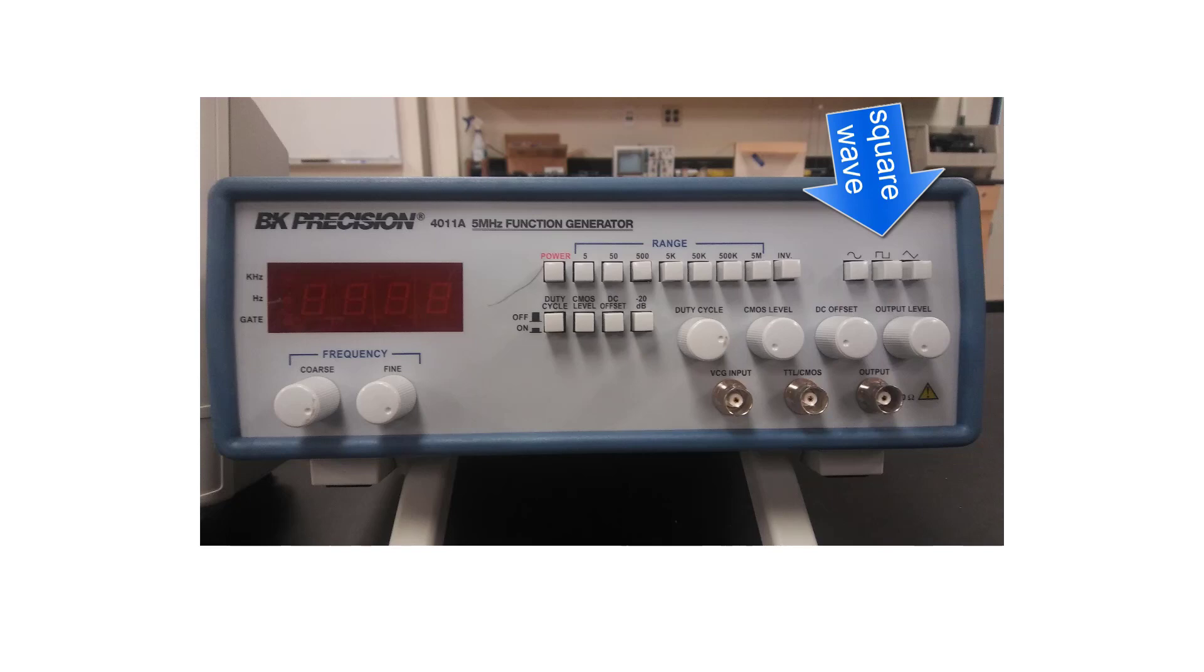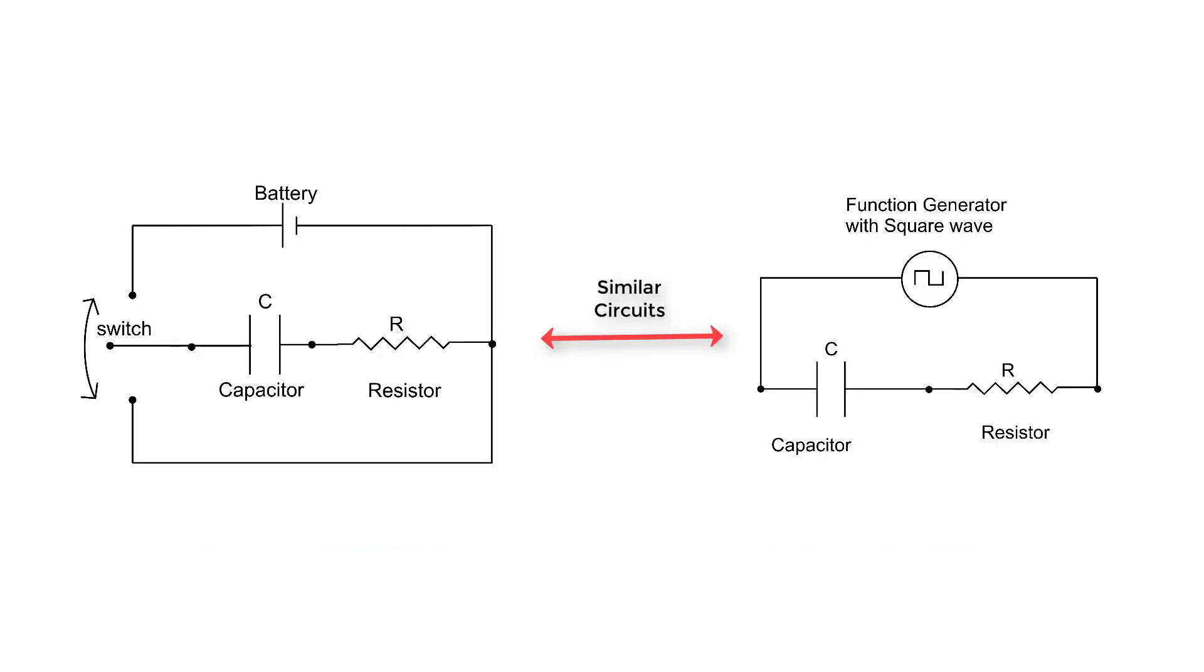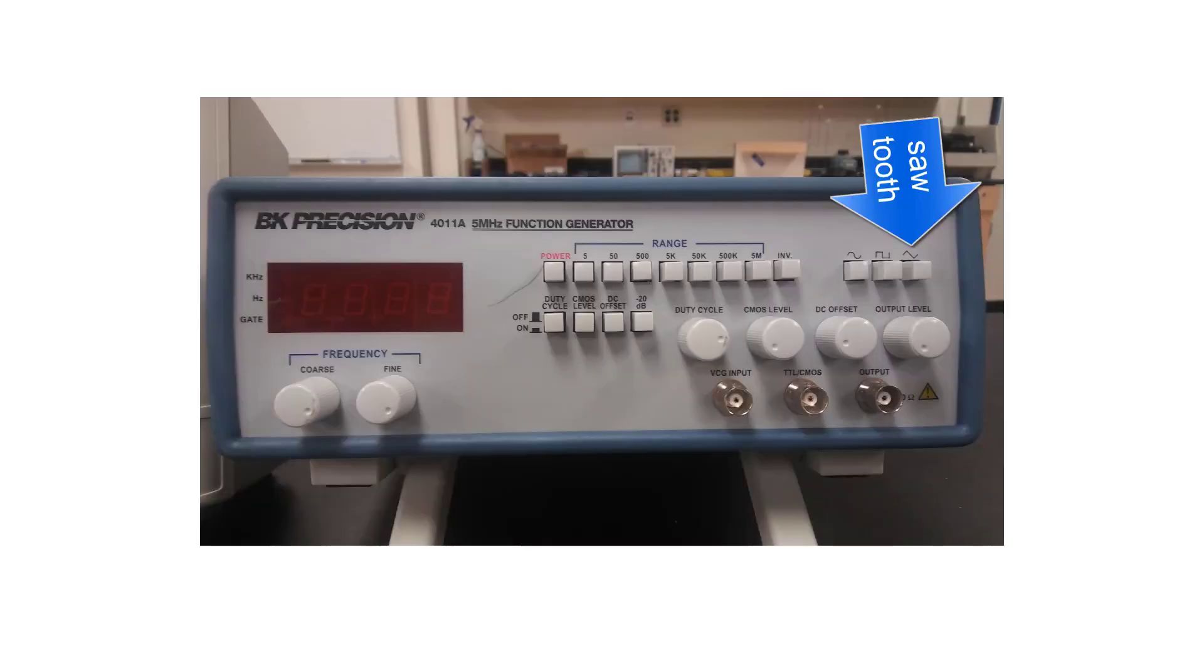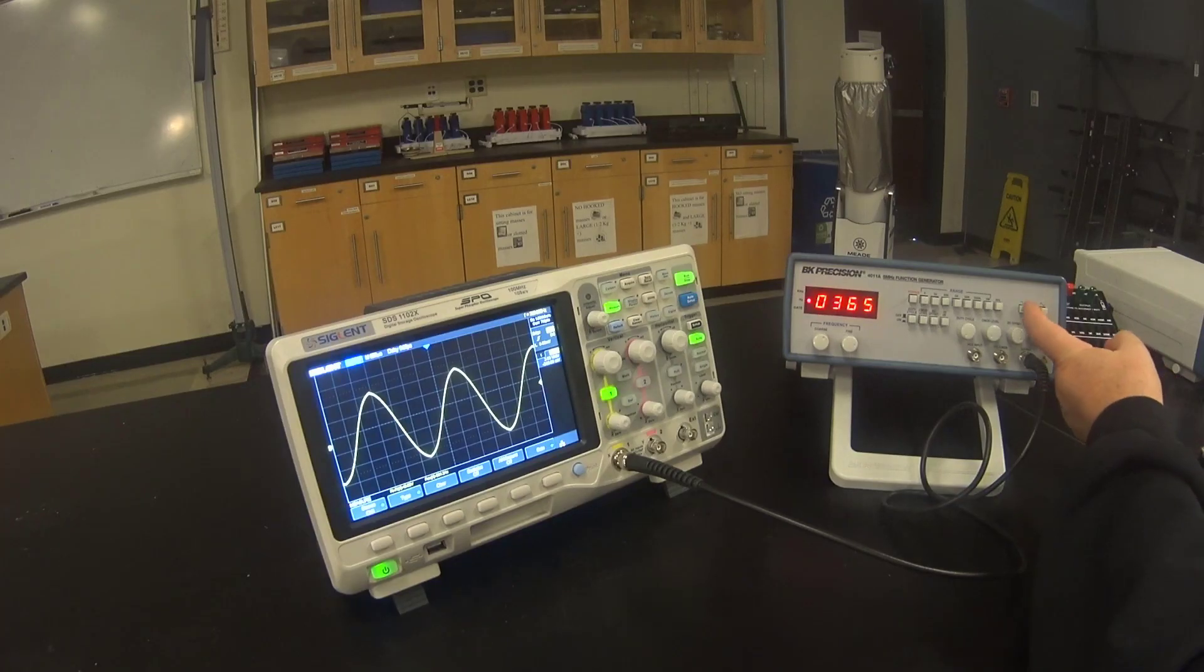The next button outputs a square wave. A function generator in square wave mode can be used to mimic a charging and discharging RC circuit. The last button is the sawtooth wave. It's not generally used in the physics introductory labs. Select a sine wave for this activity.